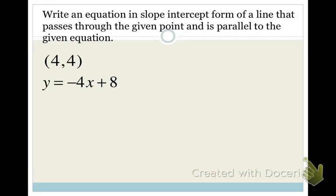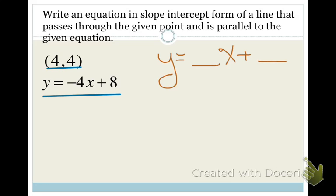What if I said: write an equation in slope-intercept form of a line that passes through the given point and is parallel to the given equation? I'm going to start with a template: y equals blank x plus blank. Since this is supposed to be parallel, my new equation has to have the same slope as the equation they've given me. This line has a slope of negative 4, so my equation must also have a slope of negative 4. Now I just have to figure out my b value.